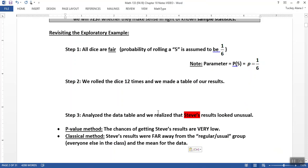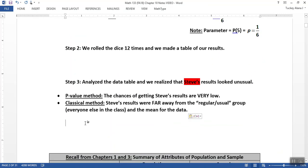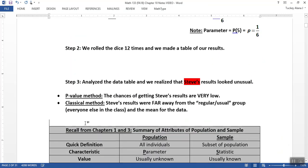So we analyze the data table, and we see that Steve's results looked very unusual. I'd like to throw the word very in there, but it'd make this line too long. And again, the two methods for seeing that were that his results were very far away from the rest of the group. That's classical method, i.e. his z-score. Or the probability of the fluke is very, very, very low. That's the p-value method.